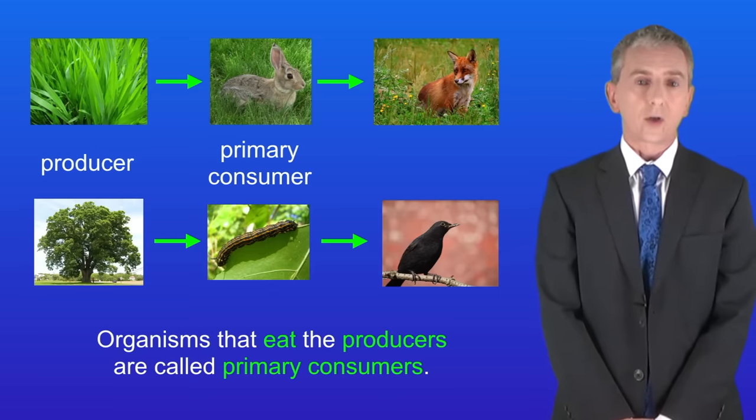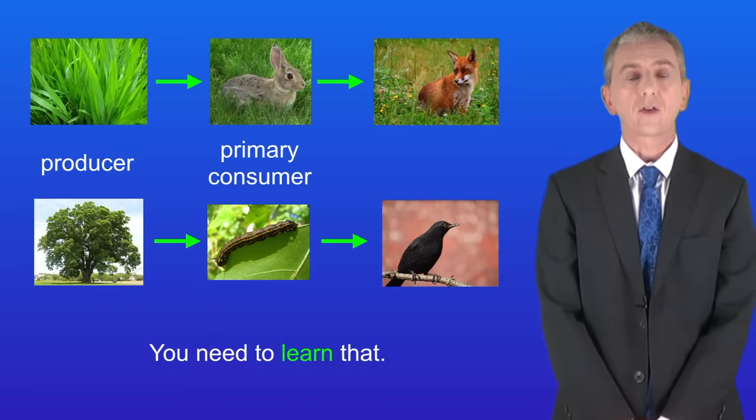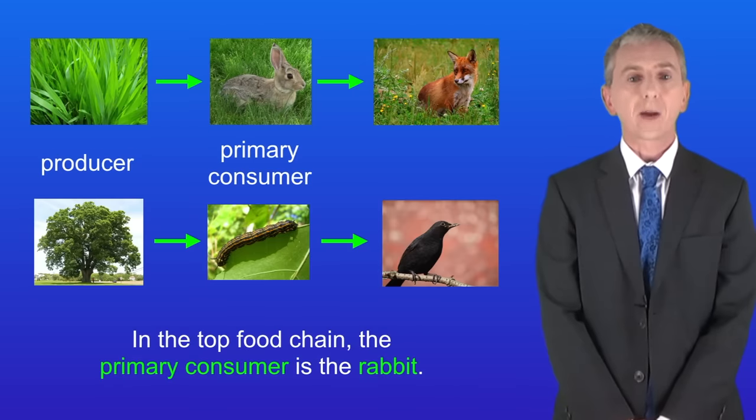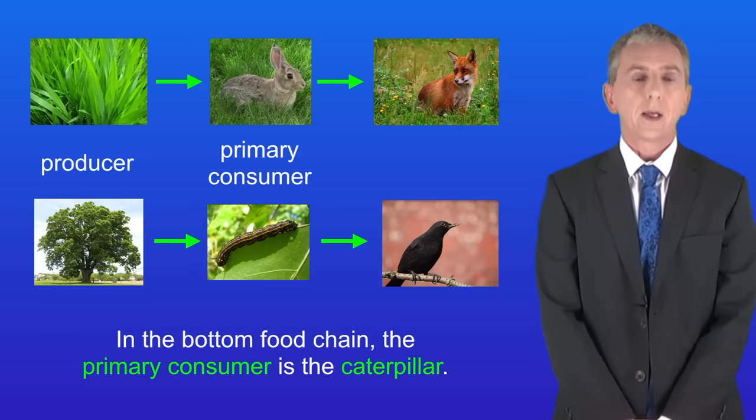Organisms that eat the producers are called primary consumers and you need to learn that. In the top food chain the primary consumer is the rabbit and in the bottom food chain the primary consumer is the caterpillar.